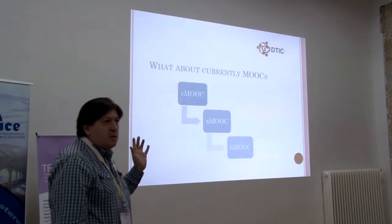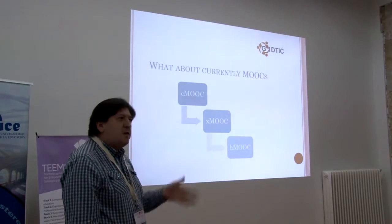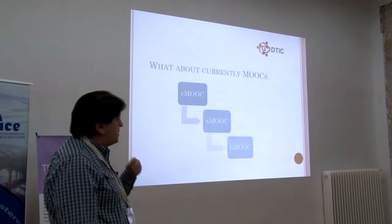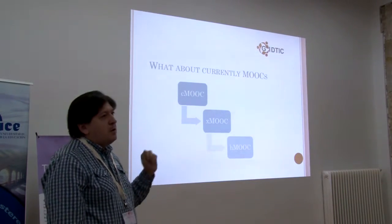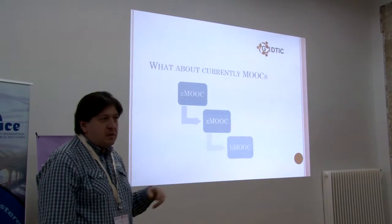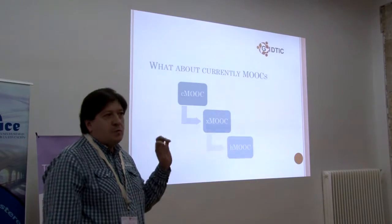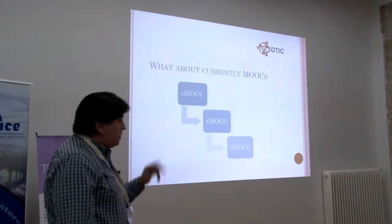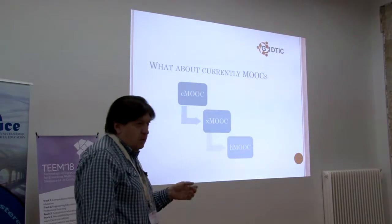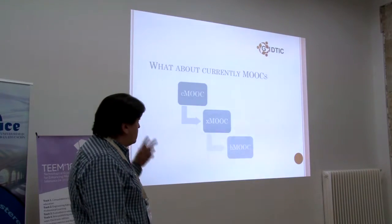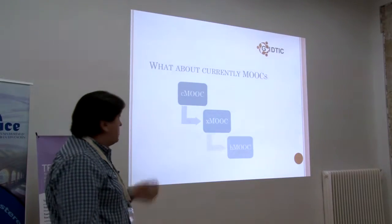The MOOC started with a model called the C-MOOC, that is connectivist and very interactive with the students. But we changed this model — this successful model — to the X-MOOC model, which is only a translation of our traditional class to a video format. And we proposed a new model, the H-MOOC, the hybrid MOOC, in which we tried to recover some part of this C-MOOC model that was so successful.